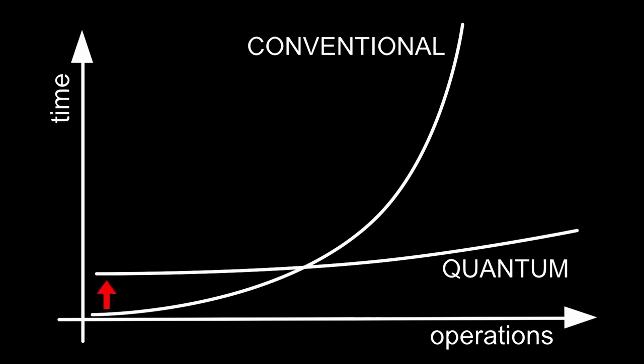If you increase the size of the problem, then both the conventional computer and the quantum computer will need more operations, and so more time. But for the quantum algorithm, the number of operations increases less with the size of the problem.